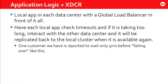Another approach is local application timeouts. If you're not getting information back from Couchbase within a certain time, the application goes to one of the other data centers to get it. One customer uses a five-millisecond window — if they can't get the information out of Couchbase, the application goes to the other data center to get it. Very tight window, but again, it depends on your RTO and RPO.